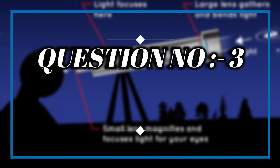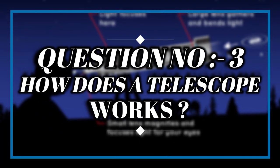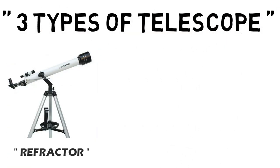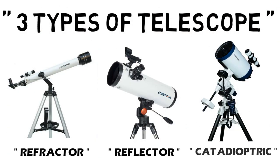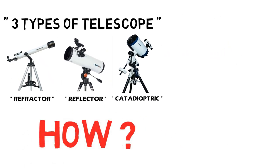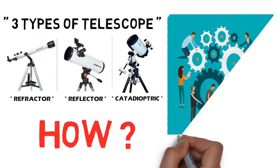Question number 3: How does the telescope work? There are three types of telescopes: refractor, reflector, and catadioptric. Now we will understand one by one the concept of how these three types of telescopes work.